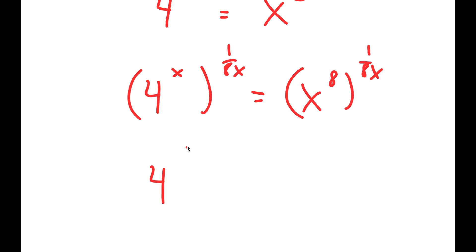Now, from here I get 4 to the power of 1 over 8, because these two cancel out, is equal to x to the power of 1 over x, because these two 8s cancel out.